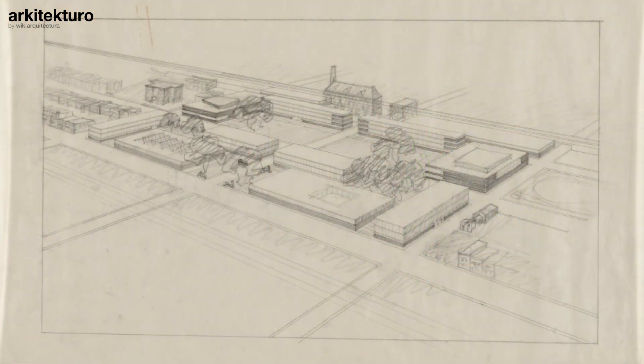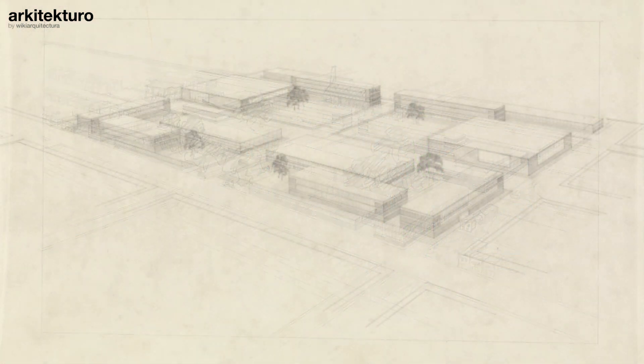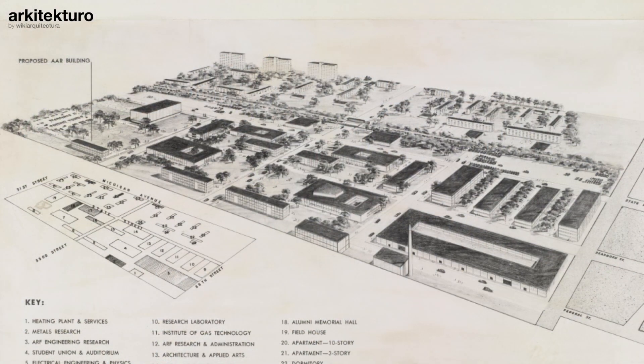As long as all buildings were part of the grid, it was okay to break the symmetry, as that wasn't what gave the campus unity anymore. From here on, Mies experimented with dozens of possible layouts, some of which we can appreciate in these sketches and collages. Several of these layouts were considered final at some point, yet the project never stopped evolving, and the campus we see today doesn't quite match any of these drawings.